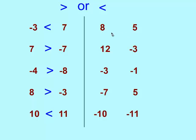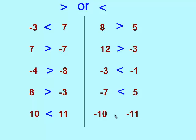Here again, two positive numbers — 8 is bigger than 5, so 8 is greater than 5. A positive and a negative — a positive number is always greater than a negative number, so 12 is greater than negative 3. Now the tricky ones: negative 3 and negative 1 — negative 3 is farther to the left, so it is smaller than negative 1. Negative 7 and 5 — the positive number is the greater number, so negative 7 is less than 5. And two negatives: negative 11 is farther to the left, so negative 10 is greater than negative 11.